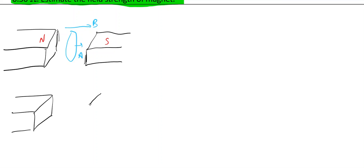So, what is the final situation? Finally, the coil is kept like this. So area vector is here, B is here. So what is the angle between B and A? It is 90 degree. So theta final is 90 degree, theta initial is 0 degree.